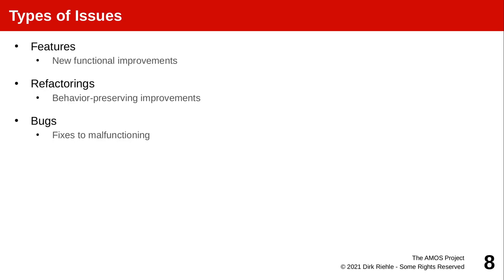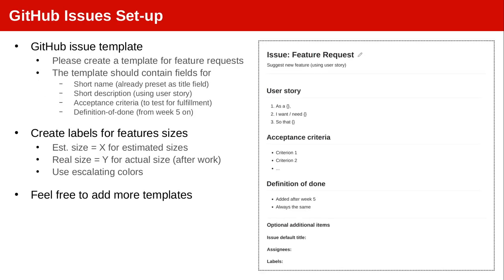A feature is a so-called issue — issue is the general term and there are multiple types of issues. The feature is perhaps the most important one because that's new functionality; that's why we are developing the software. In addition to features you may have refactorings or bugs as other types of issues. On GitHub you can create issues, and the most prominent type will be the feature, here cast as a feature request. We have given you, by way of the GitHub project we prepared, a template for feature requests which has a title and contains that user story as a way of describing a feature.